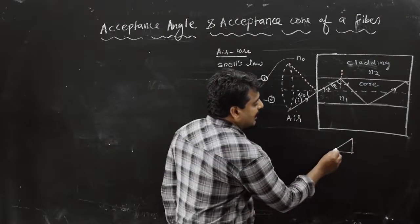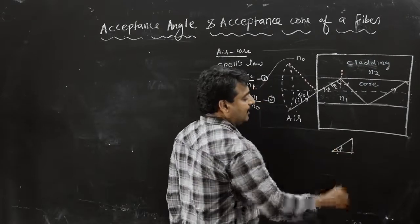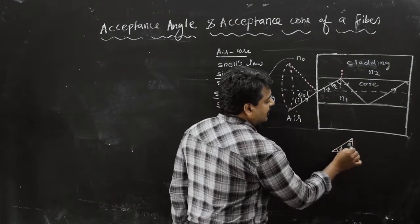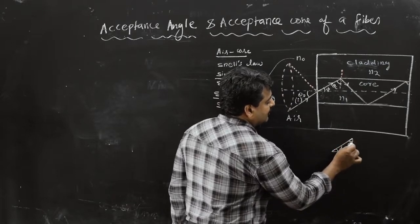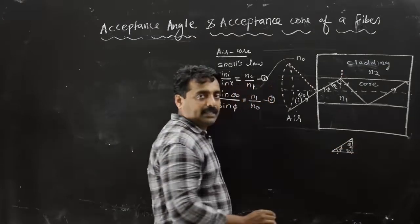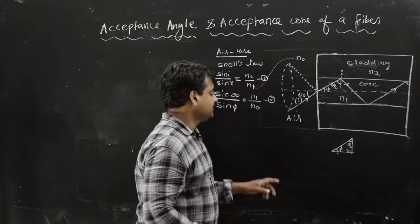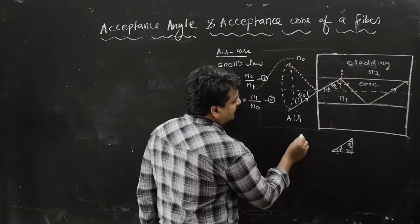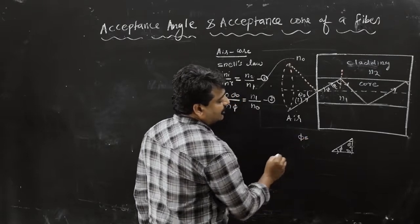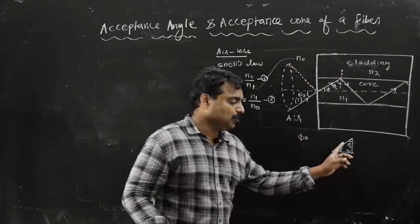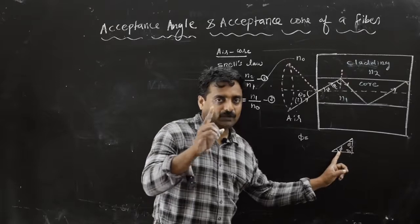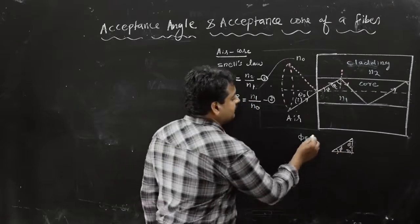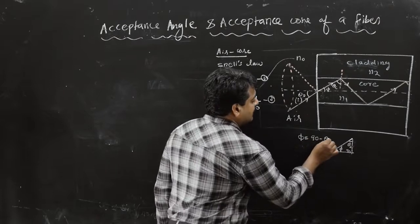This angle is phi, this is theta c, and this is 90 degrees. So we have three angles in the triangle. This angle is phi, and this angle is 90 minus theta c.